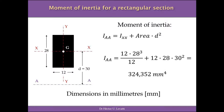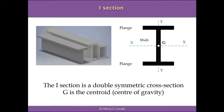With this concept, we can establish the moment of inertia for more complex cross-sections. The cross-section we focus on in this video is the I-section. Beams can have different cross-sections — T-section, I-section, rectangular hollow section, and many others — but we focus on the I-section here. An I-section has two flanges and a web, which is the rectangle in the middle. This cross-section is doubly symmetric, with symmetry about both X and Y.